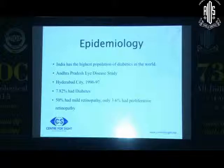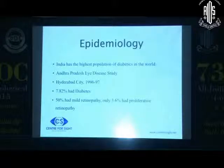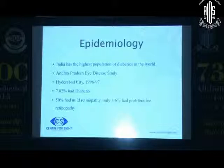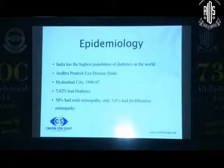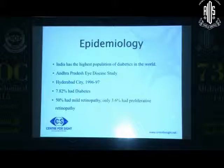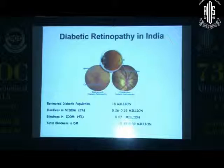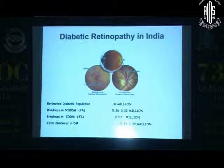India is slowly becoming the capital in terms of diabetic population, and the incidence of diabetes in India is definitely on a rise. Population-based studies have shown prevalence as high as 7.8% in the Indian population, with 50% of patients having mild NPDR ranging up to about 3% having proliferative retinopathies. An estimated population of about 18 million diabetics is what we are seeing at the moment in India.